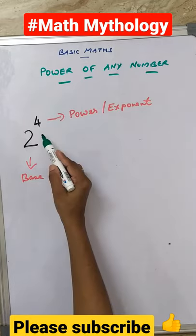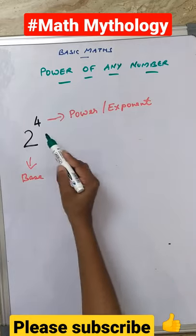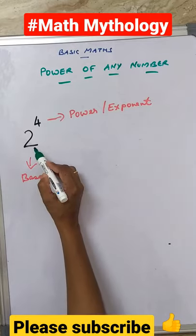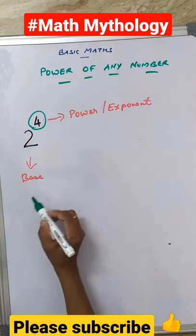So in this number, 4 is the power or exponent of the number and 2 is the base of the number. So write 2 the power times, that is 4.